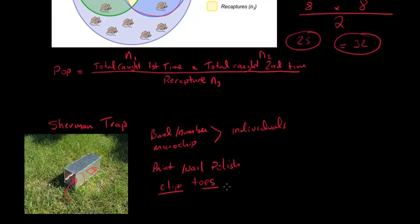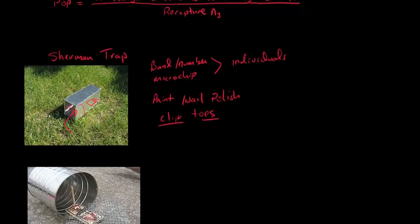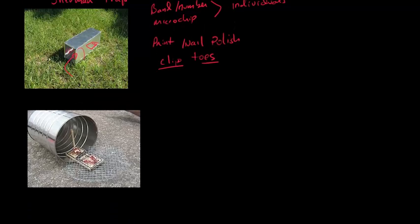And that's a more permanent way to mark them, a little bit gruesome. Now you can also make your own Sherman traps. Here's an example of a homemade Sherman trap. And so they took a like a soup can, they put a mouse trap in here and you put the food right there and the mouse comes and eats that food and that springs a trap and then that springs the door closed.